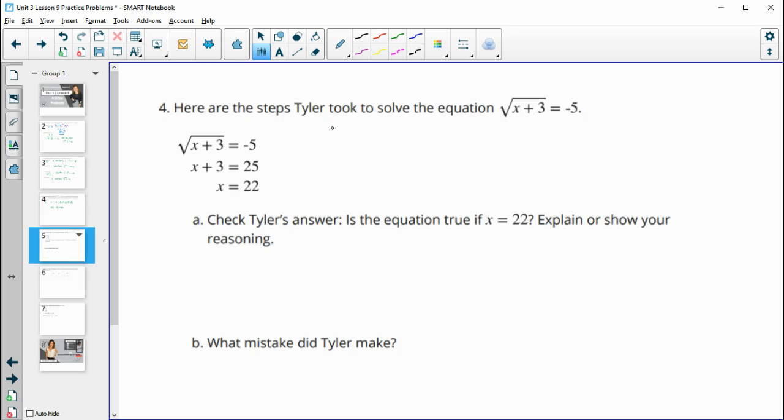Number 4, here are the steps Tyler took to solve the equation square root of x plus 3 equals negative 5. It looks like he squared both sides. Square root of x plus 3 squared is just the inside x plus 3. Negative 5 squared is 25. Then subtracted 3 from both sides to get 22.